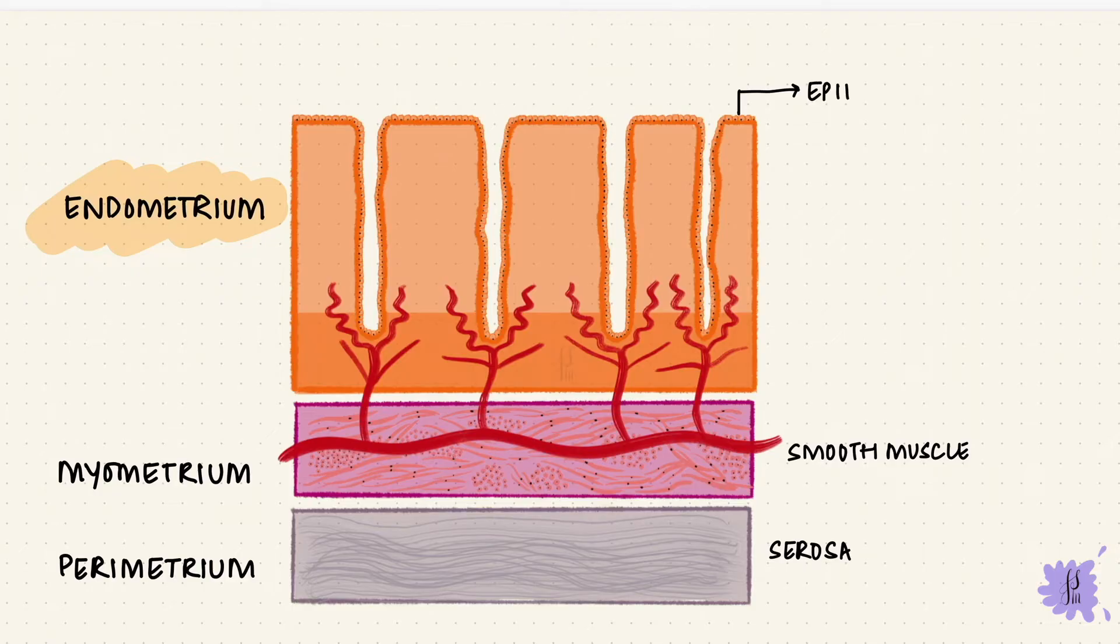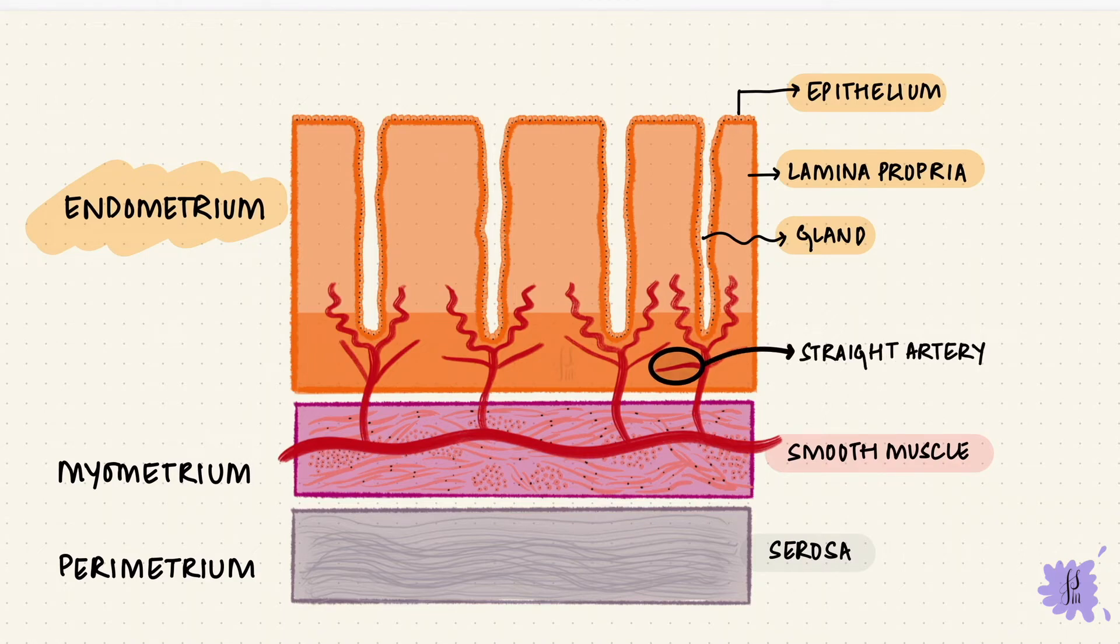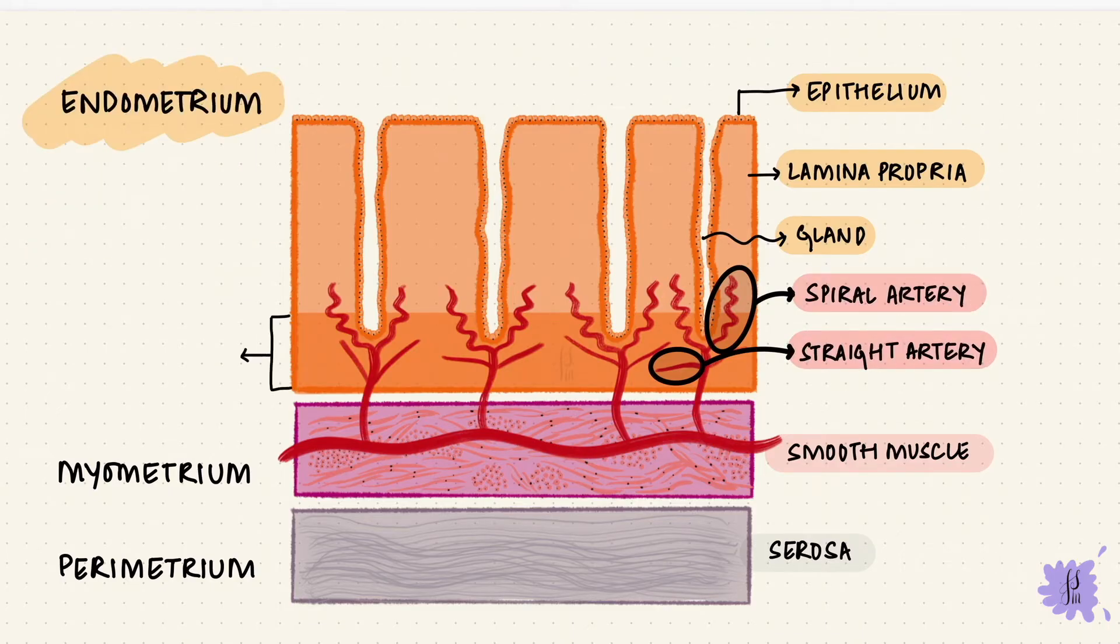The endometrium has an epithelial lining, which is simple columnar epithelium. Below that is a lamina propria. The epithelium extends down into the lamina propria, forming glands. The uterus is supplied by uterine arteries. These arteries branch and form arcuate arteries, radial arteries. But what we need right now are the straight arteries and the spiral or coiled arteries. The straight arteries only extend to the basal layer of the endometrium. While the spiral arteries can extend up to the functional layer. So there's a stratum functionalis above and a stratum basalis below. What gets shed during menstruation is the stratum functionalis, leaving behind the stratum basalis.